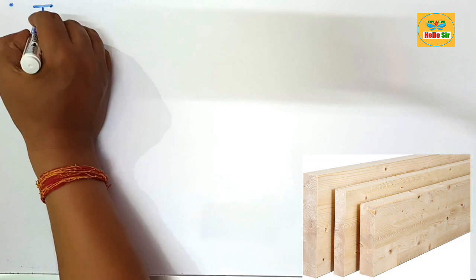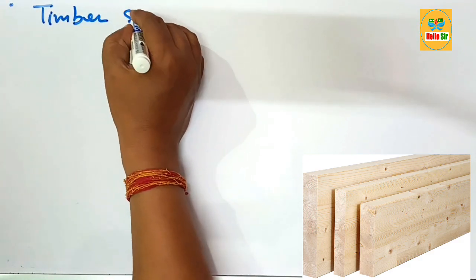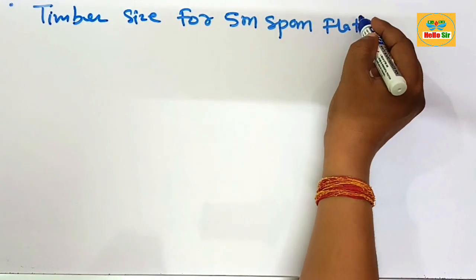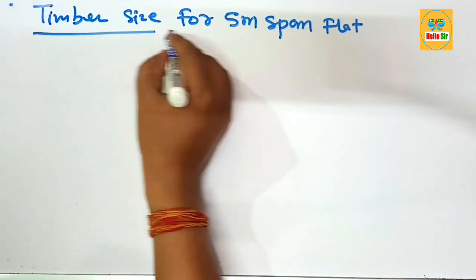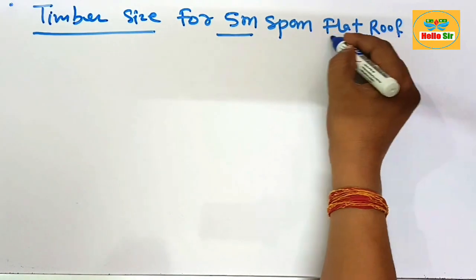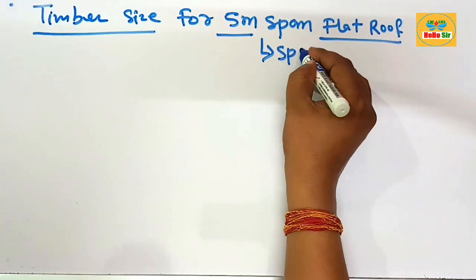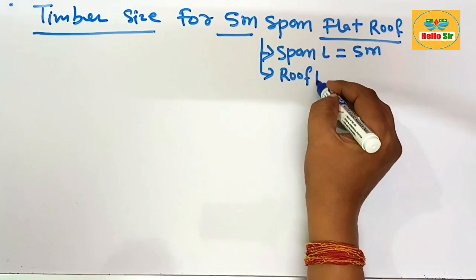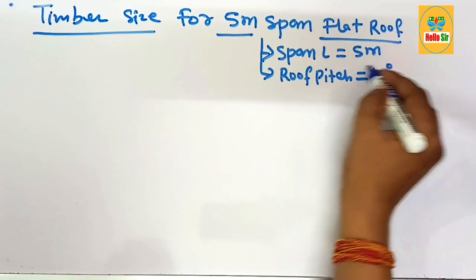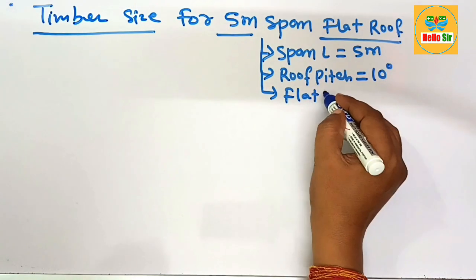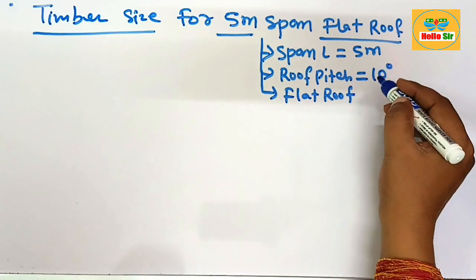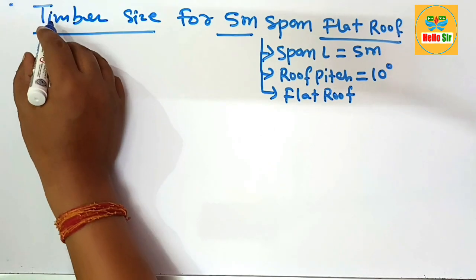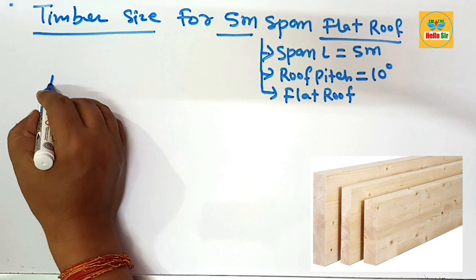In this video, you will learn about the timber size required for a 5-meter span flat roof. The span length is 5 meters, and the roof pitch for a flat roof is a maximum of 10 degrees — that is why it is called a flat roof. You have to find out the timber size, meaning the depth and width section of the joist.